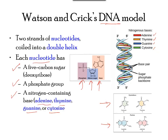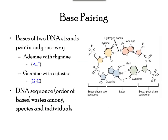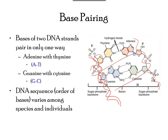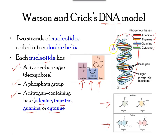The phosphate group of one nucleotide covalently bonds with the sugar molecule of the next nucleotide, forming a long chain of nucleotides. The sugar-phosphate group becomes the backbone for each strand of DNA, and the nucleotide base sticks out from this backbone. As you can see in the image, DNA molecules look like a twisted ladder, with the steps of the ladder being the nitrogenous bases sticking out from both backbones.